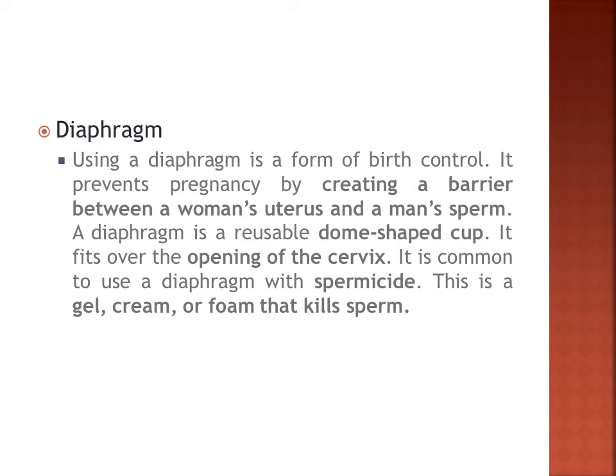Next we have the diaphragm. Using a diaphragm is a form of birth control that prevents pregnancy by creating a barrier between a woman's uterus and a man's sperm. A diaphragm is a reusable dome-shaped cup that fits over the opening of the cervix — the part connecting the vagina and the uterus. It is commonly used with spermicide, a gel, cream, or foam that kills sperm.